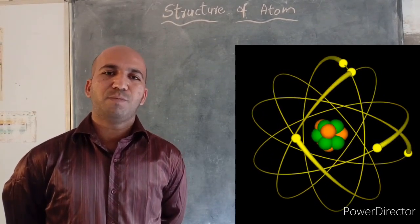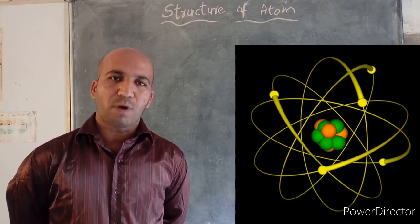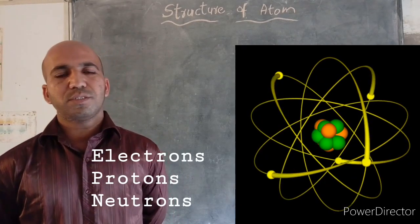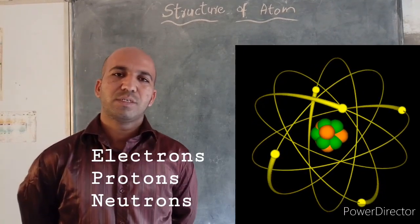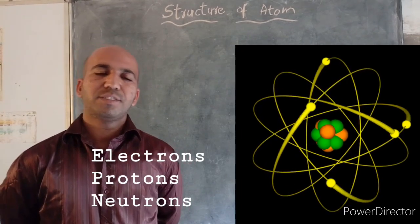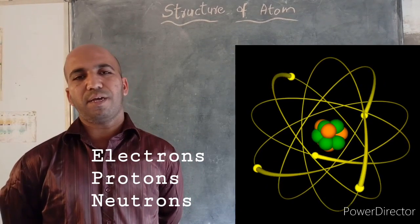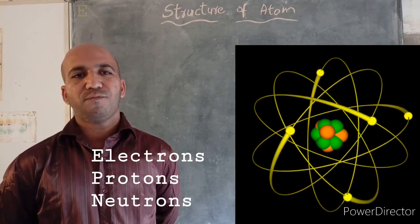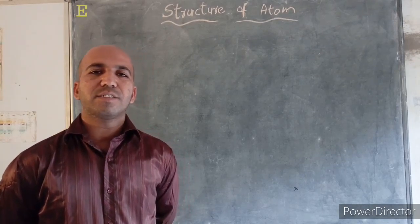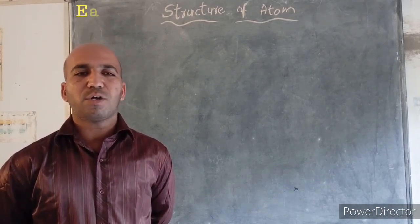So in this smallest atom, there are some subatomic particles. They are electrons, protons and neutrons. We know that the structure of atom has been explained by so many physicists. So now in this class, we are going to discuss about these atomic models.